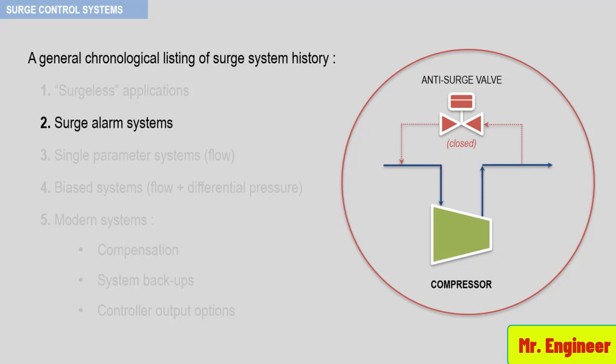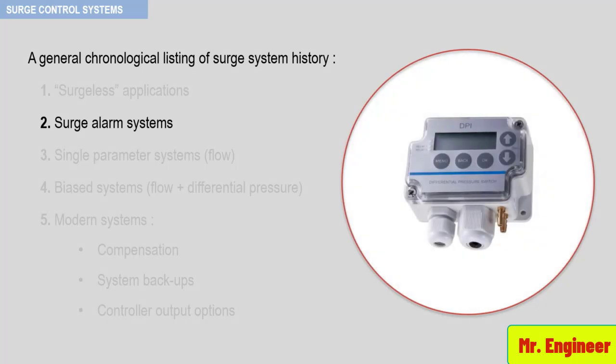A properly installed surge alarm system can eliminate these unnecessary shutdowns. Now, the reliability of these systems should be mentioned. Frequently, these detection systems are simply differential pressure switches as depicted here. Depending on the application, surge can be very violent or very light. However, in the case of low pressure applications or low molecular weight applications, the effect of surge will be minimal and the sensitivity of the surge sensor device must be investigated to make sure that the surge event is detected.